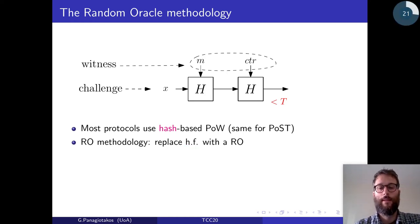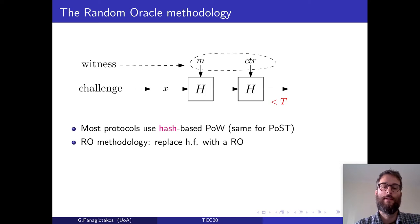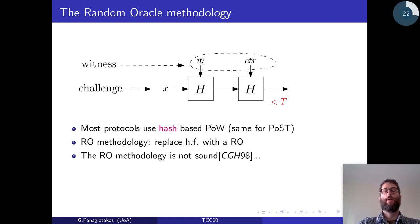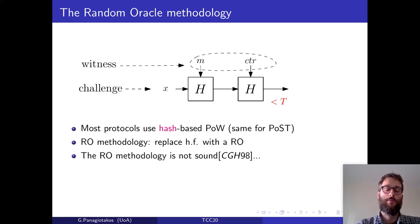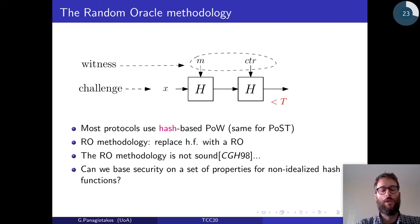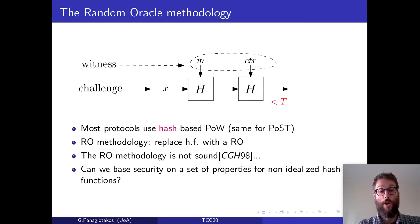The way these protocols are analyzed is using the random oracle methodology. This methodology dictates that we should replace hash functions with a random oracle and then prove security. It has been shown by Canetti, Goldreich, and Halevi in 1998 that the random oracle methodology is not sound, and should normally be used as a sanity check for our protocols. Hence, the question we pose here is whether we can base the security of proof-of-work blockchain protocols on a set of properties for non-idealized hash functions.